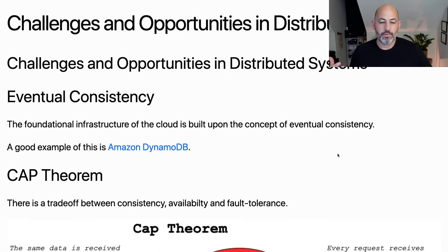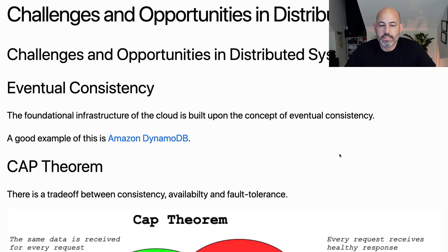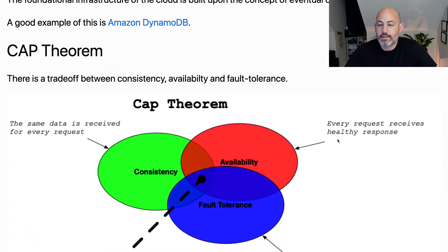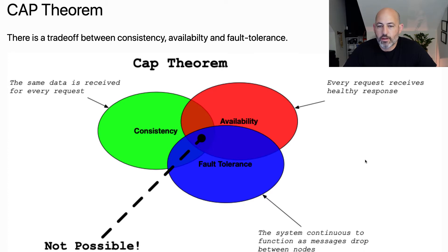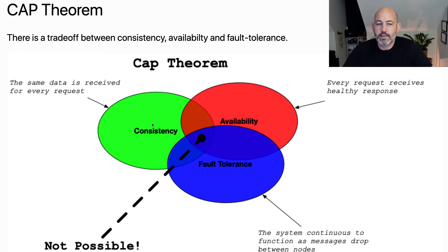One of the key challenges is eventual consistency. A good example of a service that takes advantage of this is Amazon DynamoDB. This leads us to the CAP theorem, which describes the trade-off between consistency, availability, and fault tolerance. Every data request in the case of consistency returns the same data; availability means you always return a healthy response; and fault tolerance means the system continues to function even when messages drop between nodes.